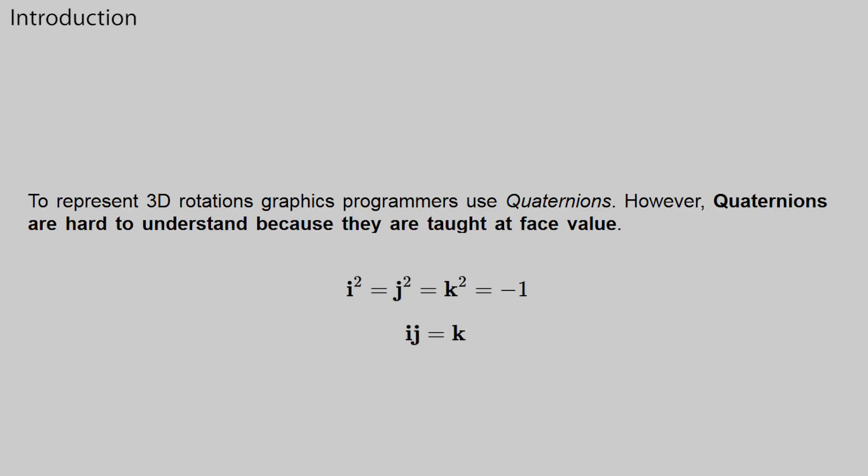We sort of just accept their odd multiplication tables and other arcane definitions and use them as black boxes that rotate vectors in the ways we want. Why does i squared equal j squared equal k squared equals negative 1 and i times j equals k? Who cares as long as I rotate my vectors the right way, right?